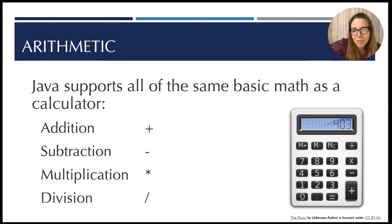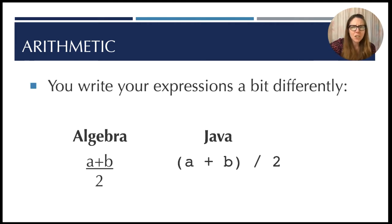So the title of this all was arithmetic. Java supports all of the same basic math that your calculator does. We can do addition, subtraction, multiplication, and division, and we do all of those with the symbols that you've probably made use of before: plus, the minus sign, an asterisk to denote multiplication, and a slash to denote division. You write your expressions just a bit differently - it looks a little bit like what you might type into your calculator. So we have in algebra if we wanted to write out a plus b divided by two, we could do it as we see on the screen. In Java we just have to spread that out on one line, so we put parentheses around the a plus b and then we use that slash to denote division by two.